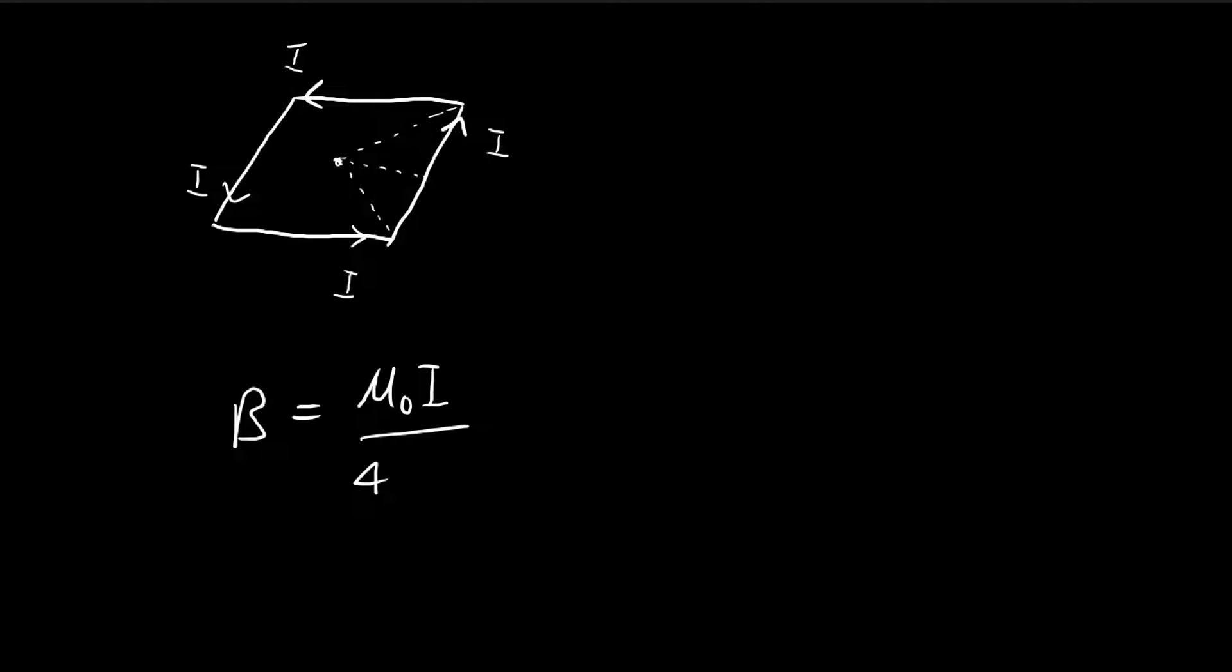The magnetic field is equal to this. The distance from this point to the center, if you drop it perpendicular down, the distance is R. And because this is a square, this angle is going to be π over 4, so it's 45 degrees. Same for this.